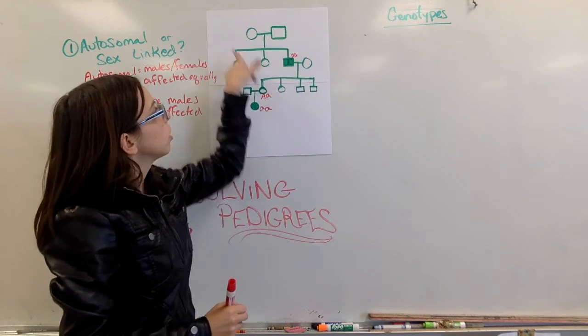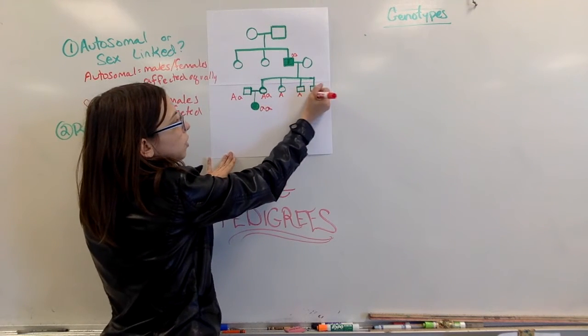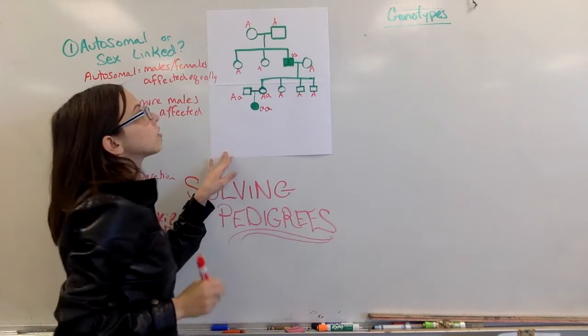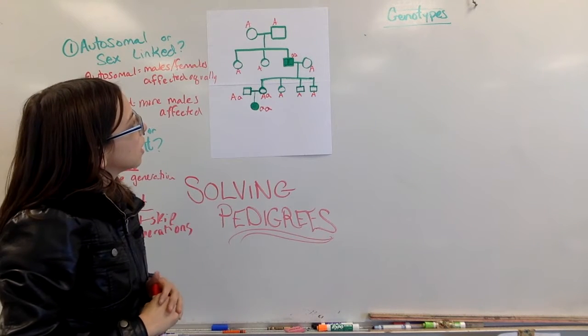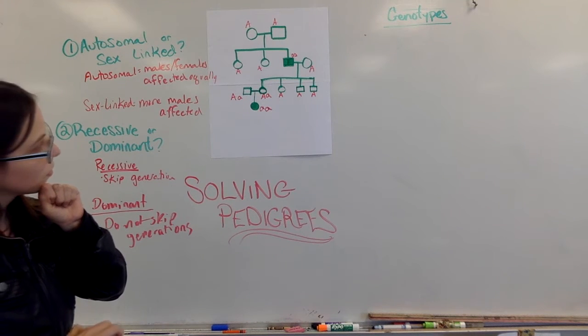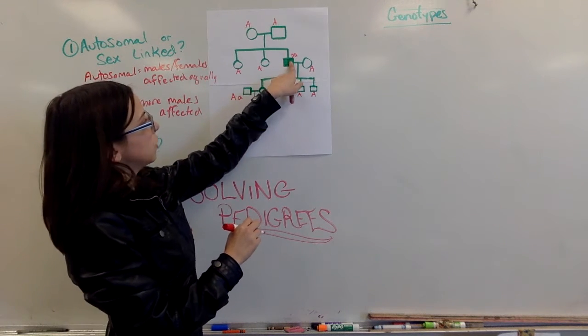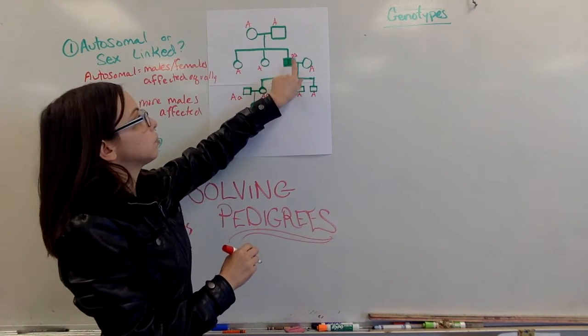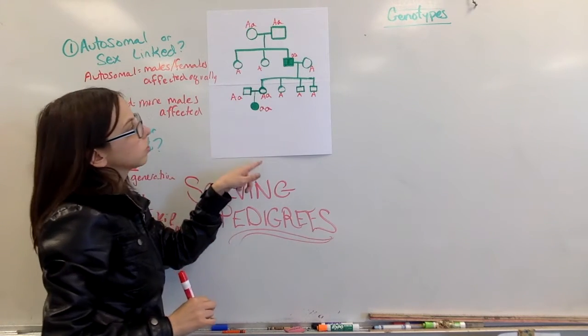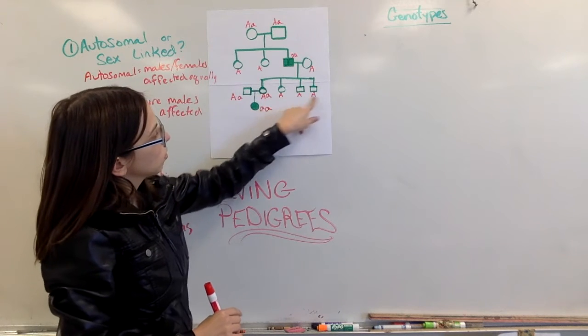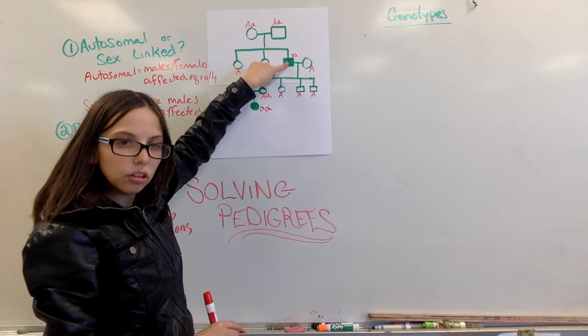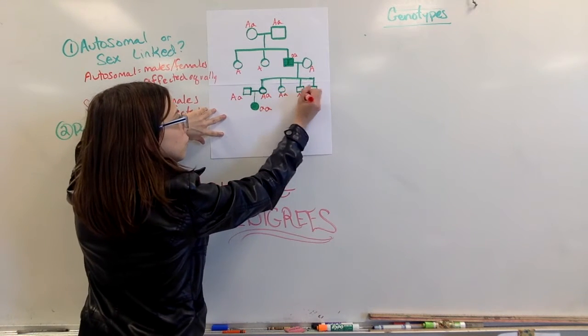For all these other non-affected individuals, again, we know they have at least one dominant. That's why they show that particular trait. And the remainder, you could do the other ones. For this individual, you use the same rules as you did here. This individual, both their parents had a recessive allele. So we can fill that in. So two heterozygous parents. This one, for these remaining children here, because this parent has both recessive alleles, that's the only thing they're going to be able to donate to their children. So I can fill those in as well.